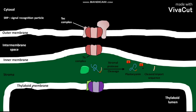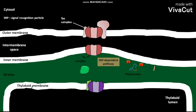The cleaved stromal import sequence remains in the stroma. During the first step of the SRP-dependent pathway, the plastocyanin protein binds with a set of chaperons, denoted as C. These chaperon proteins keep the plastocyanin protein in an unfolded state in the stromal space. The chaperon proteins then leave the unfolded plastocyanin protein.